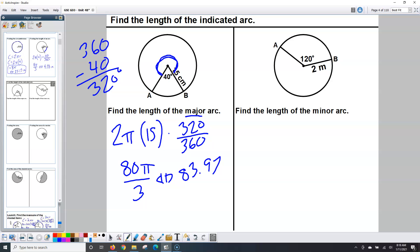Next one, find the length of the minor arc. When I look up there I'm looking for a degree that's less than 180 or less than half the circle. 120 is a minor arc, so I'm going to use the 120. I'm going to say 2πr is 2 in this case times 120 out of 360. Punch it in my calculator, I get 4π over 3, and I could write that as 4π over 3 meters, or that would be 4.18 meters.